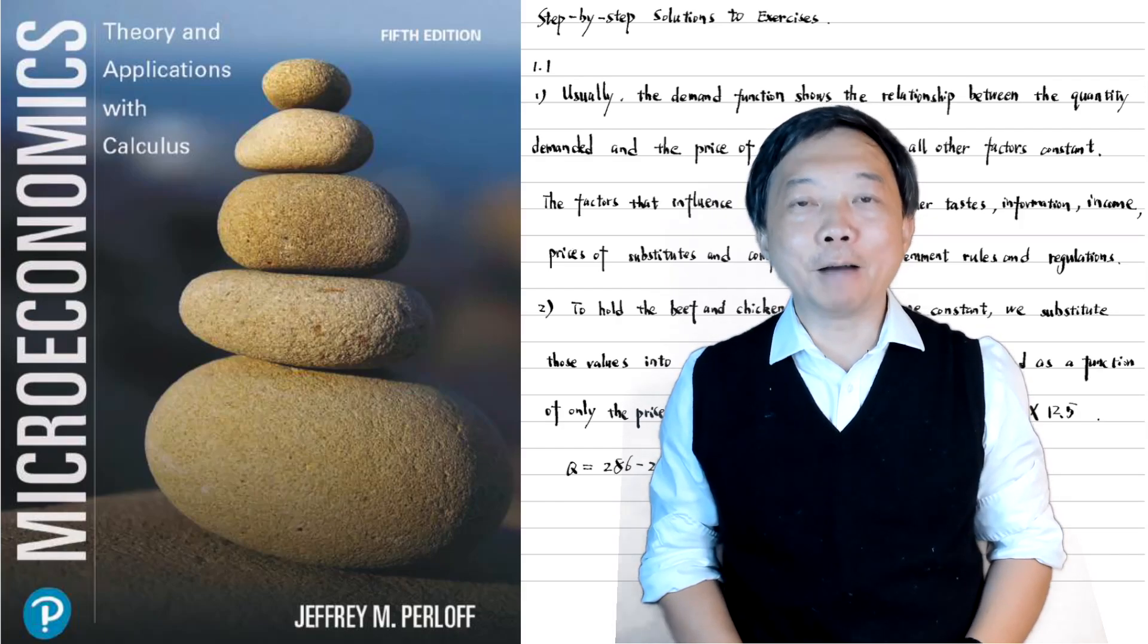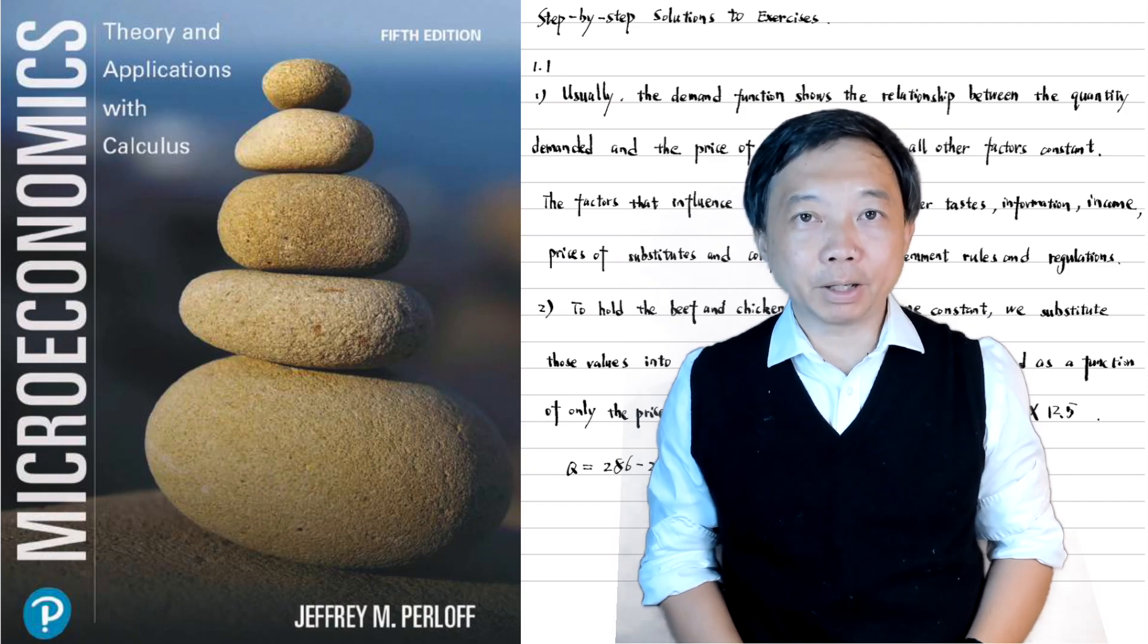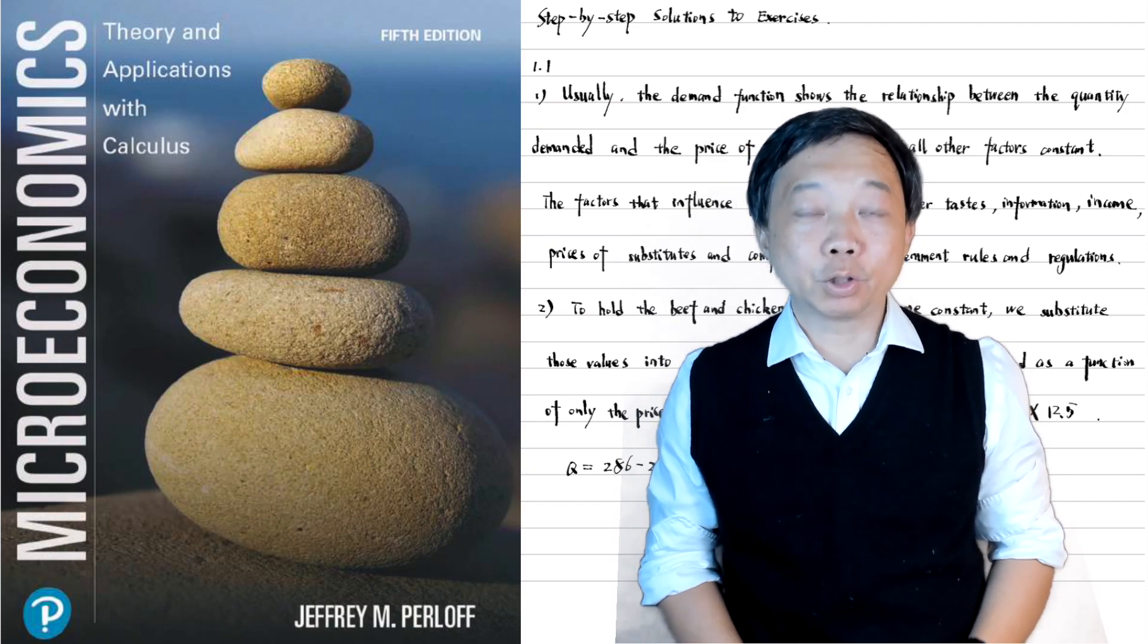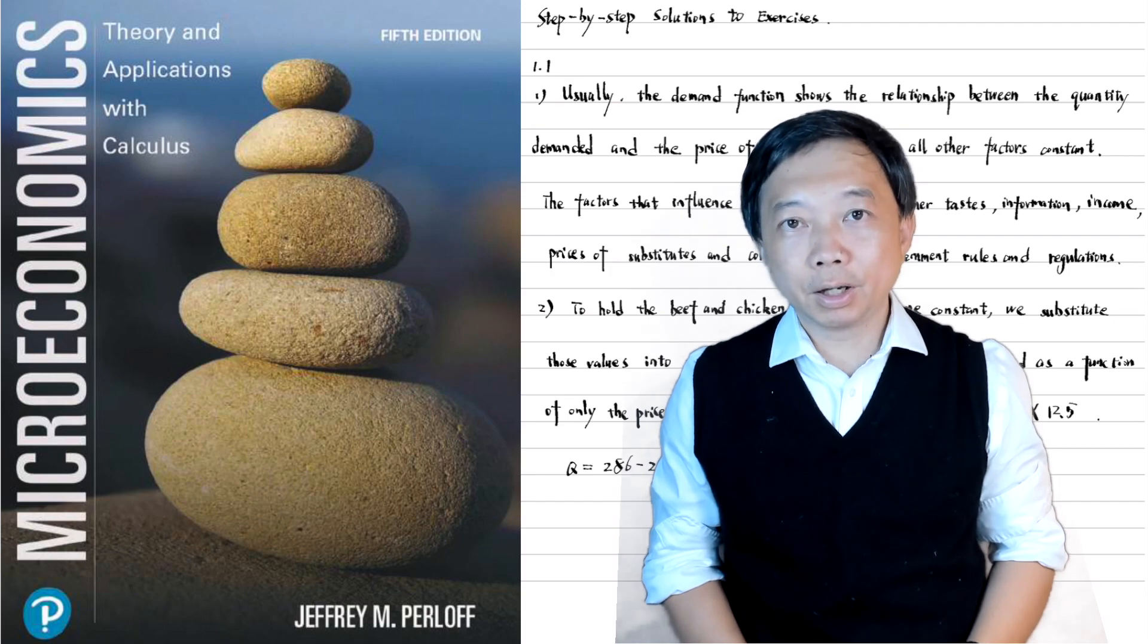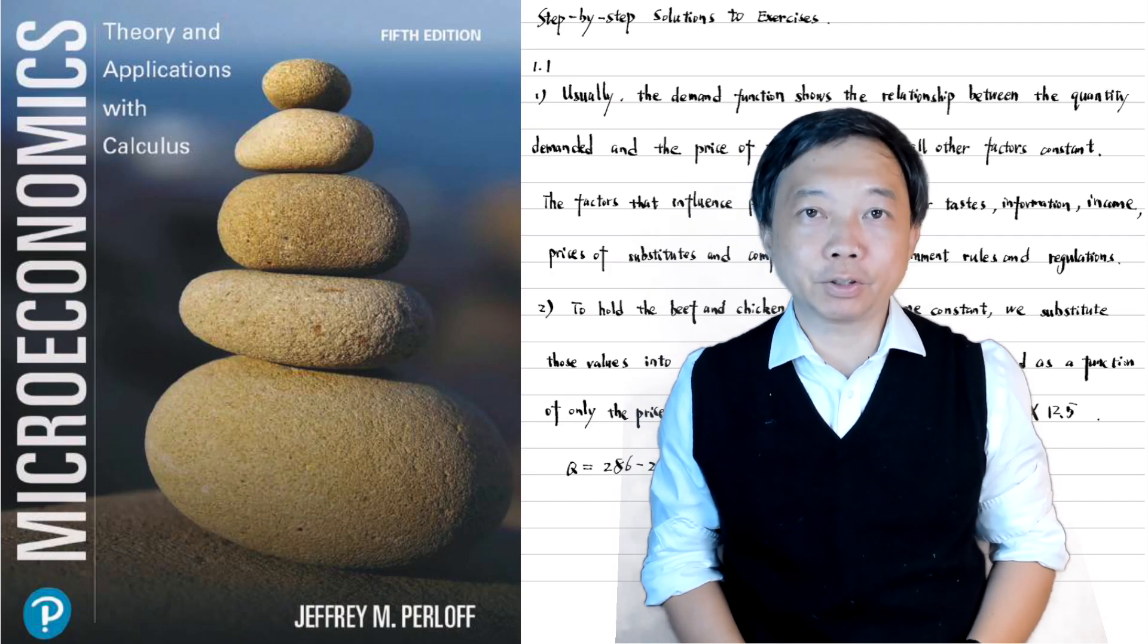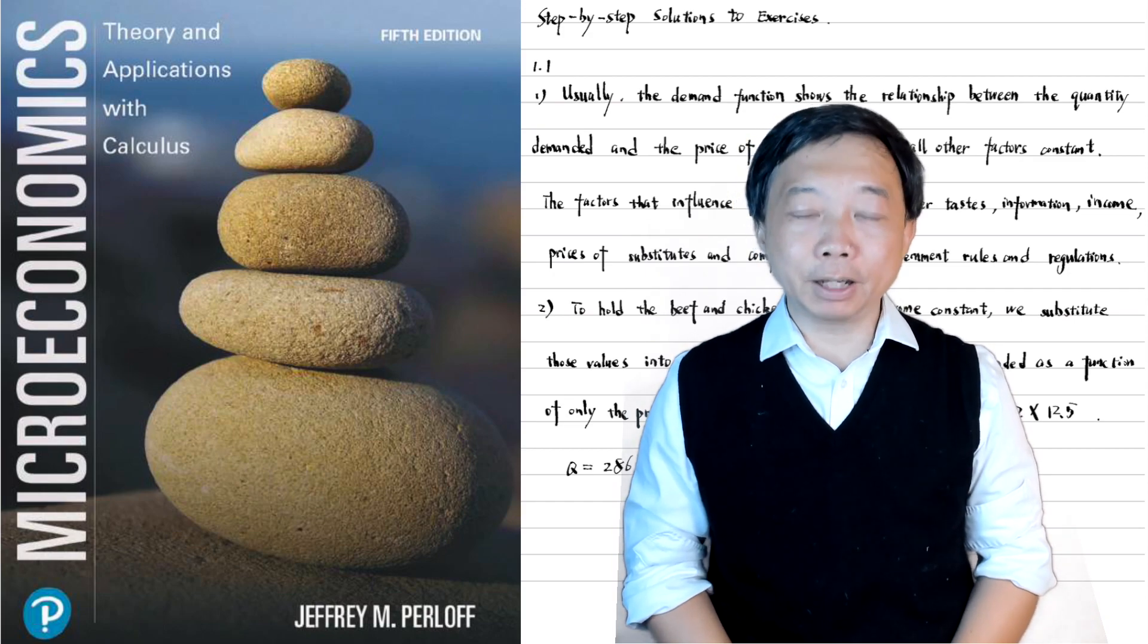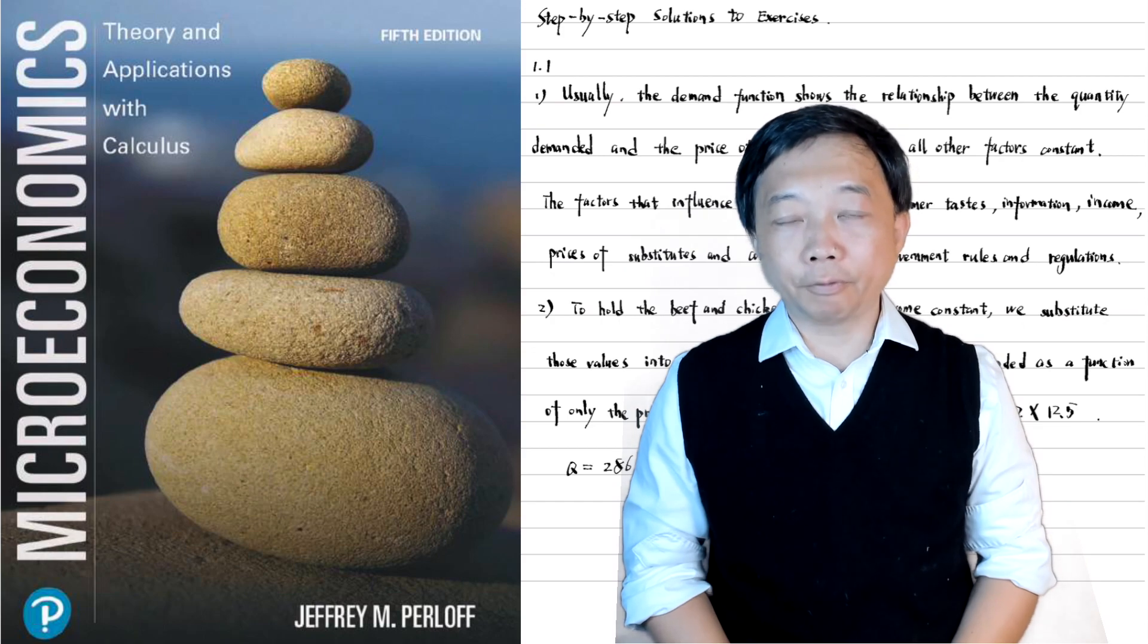Hi, I'm Bob. The textbook Microeconomics Theory and Applications with Calculus is one of the most popular textbooks in microeconomics and is widely used in colleges and universities. Let's solve the exercises at the end of each chapter together. I use the fifth edition of the textbook. I will show you the step-by-step solutions for each problem.